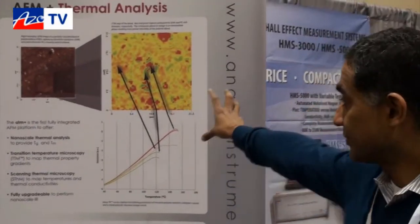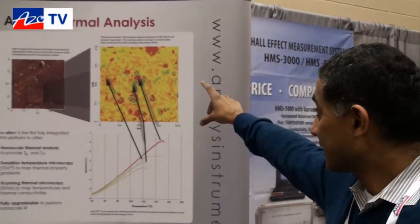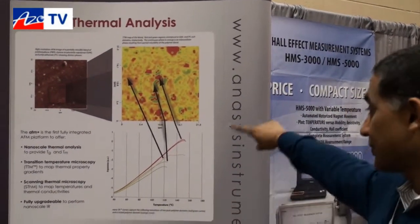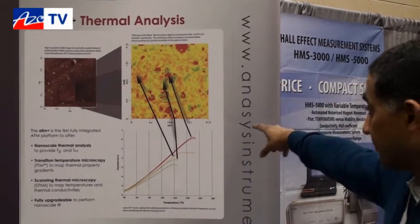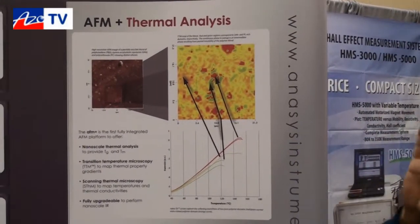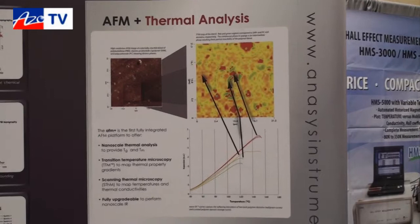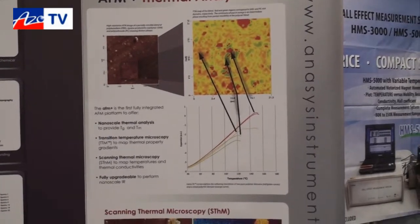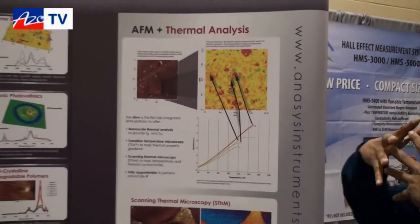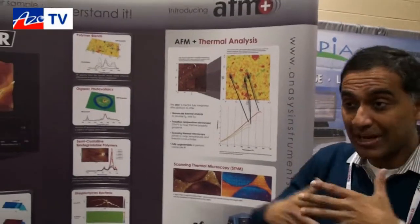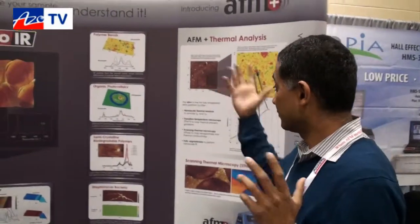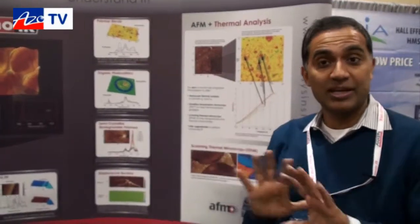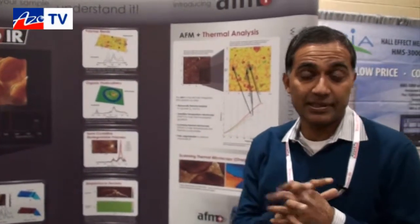Not only does it do point thermal analysis giving you Tg and Tm information, you can also generate a map of transition temperatures that we call transition temperature microscopy. Shown here is a polymer blend and a map where each point is an actual nano TA curve, and the softening point is color-coded to give a visual idea of how transition temperatures vary across the surface. Our customers who have found this very useful include people working in polymer blends, used in applications ranging from organic photovoltaics to displays to biopolymers — and in this case it was used to understand blend miscibility.